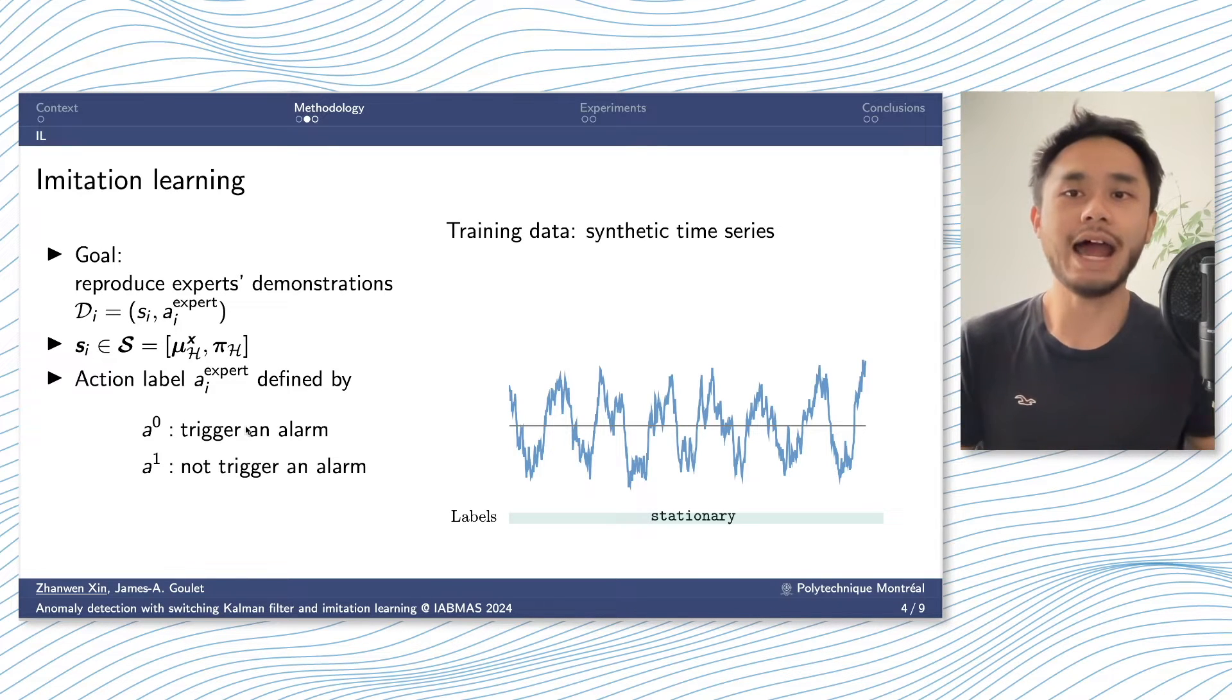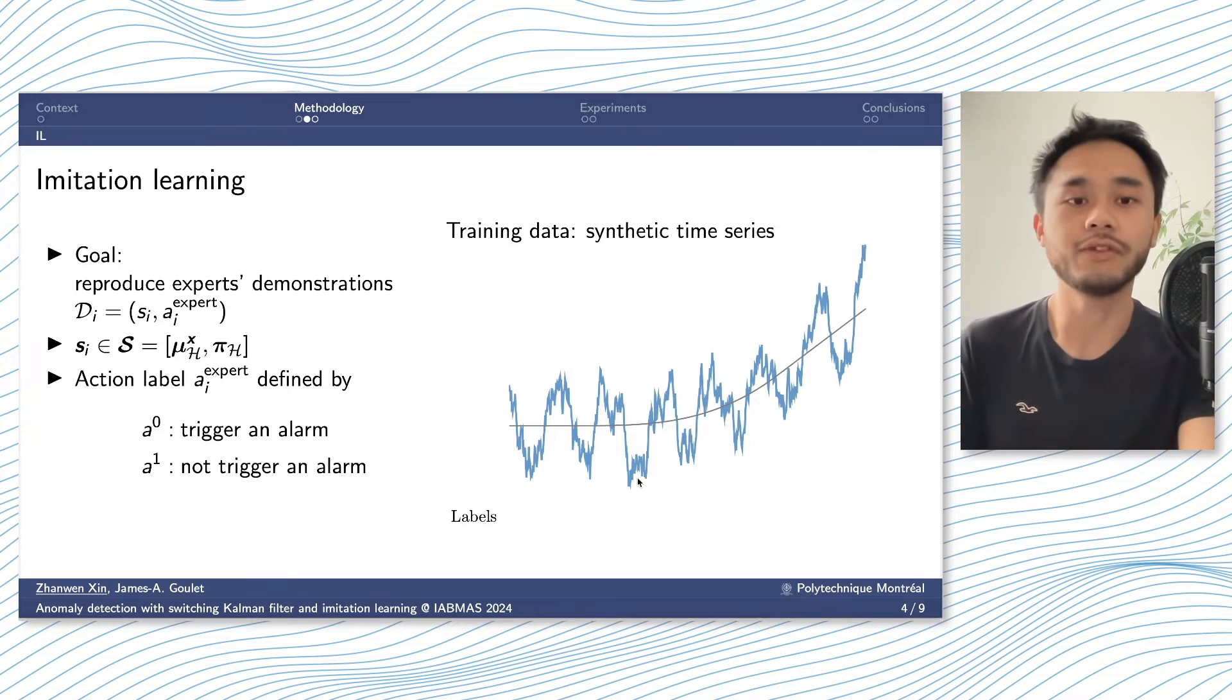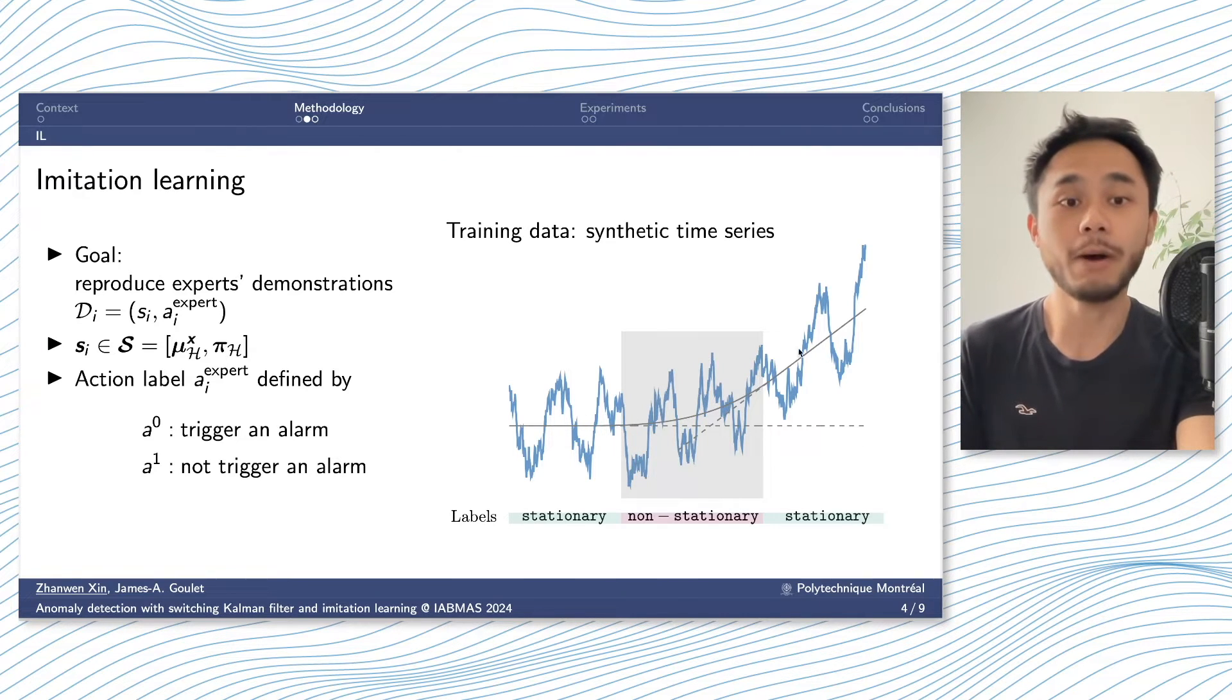To train our IL agents, we will need a lot of time series. And in this study, we use synthetic time series generated using Bayesian dynamic linear model. For a stationary time series, all the measurements would be labeled as stationary. And for the non-stationary time series, we would separate three parts of it.